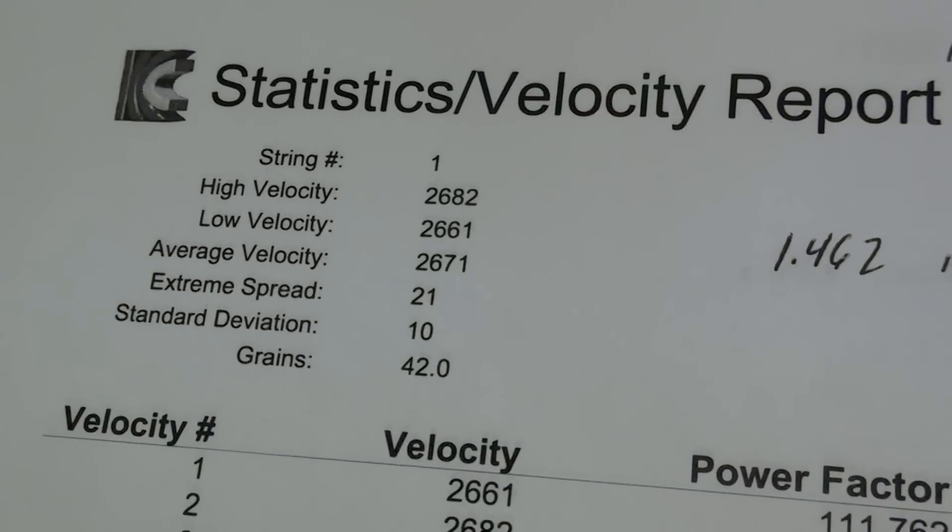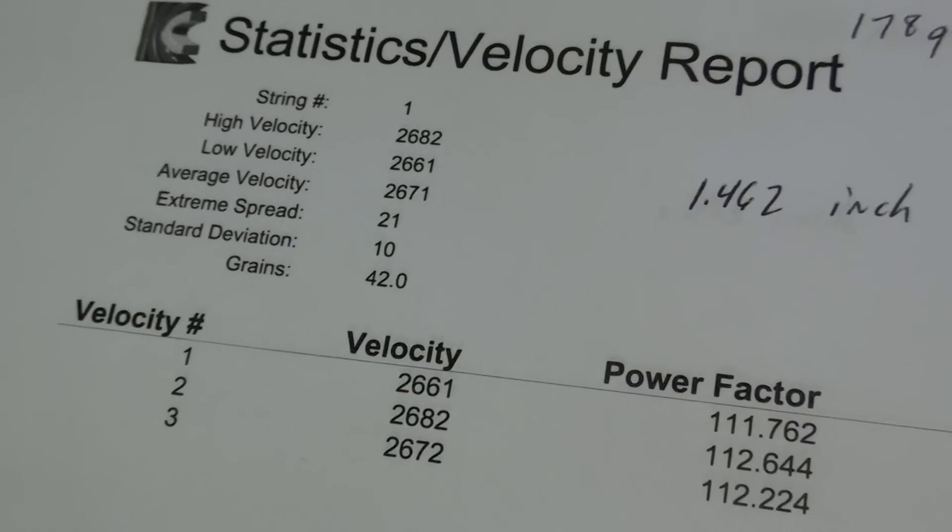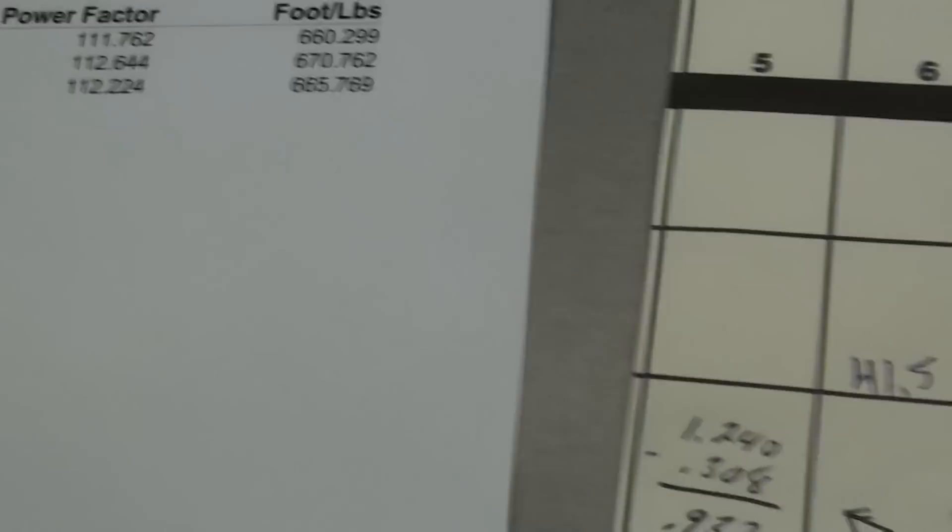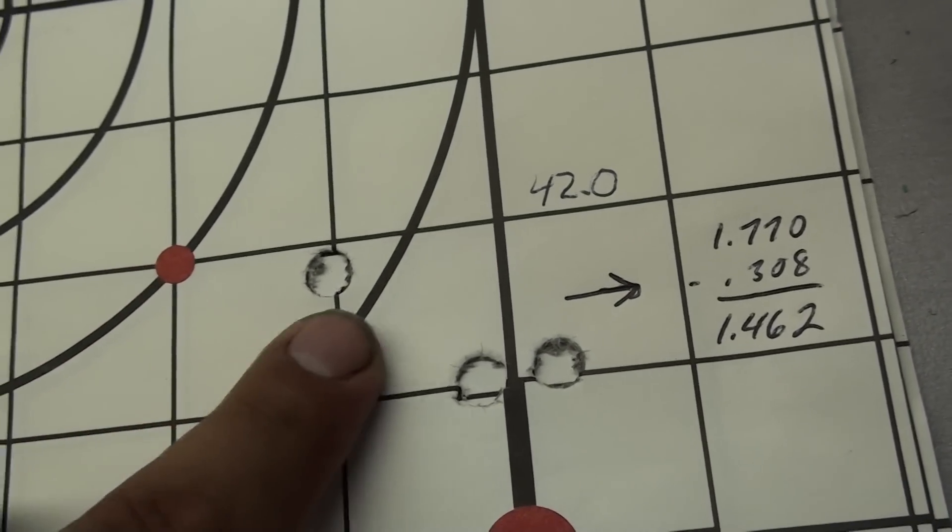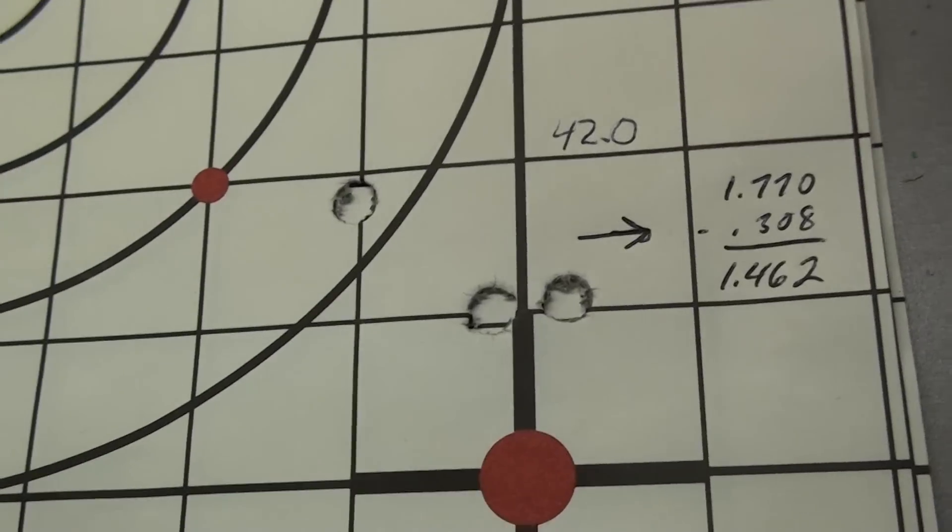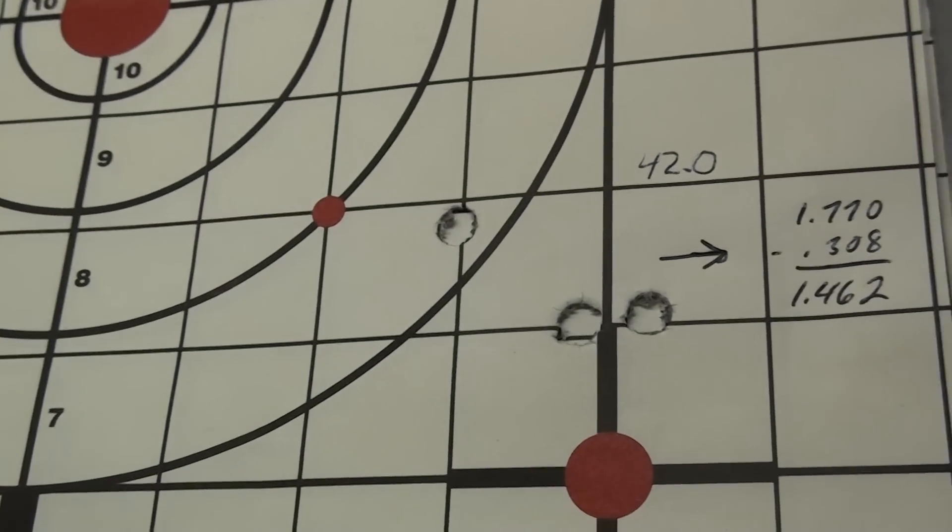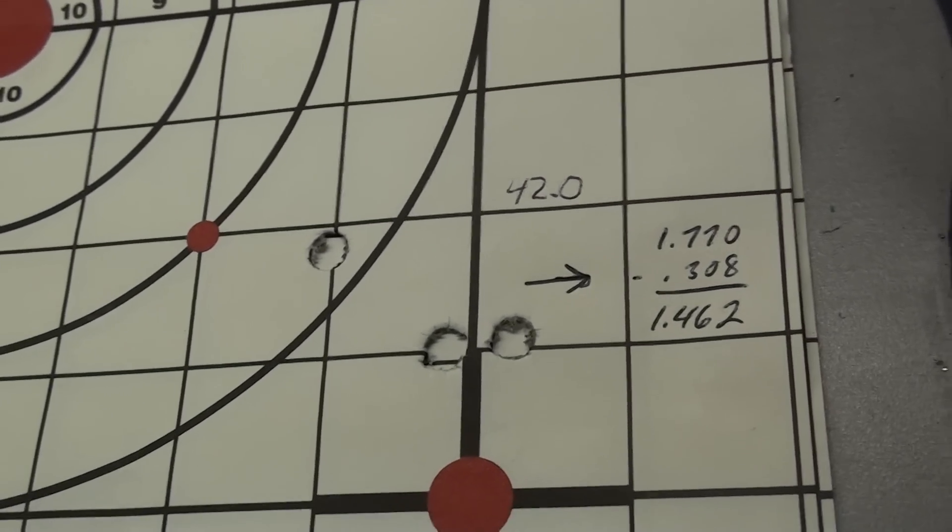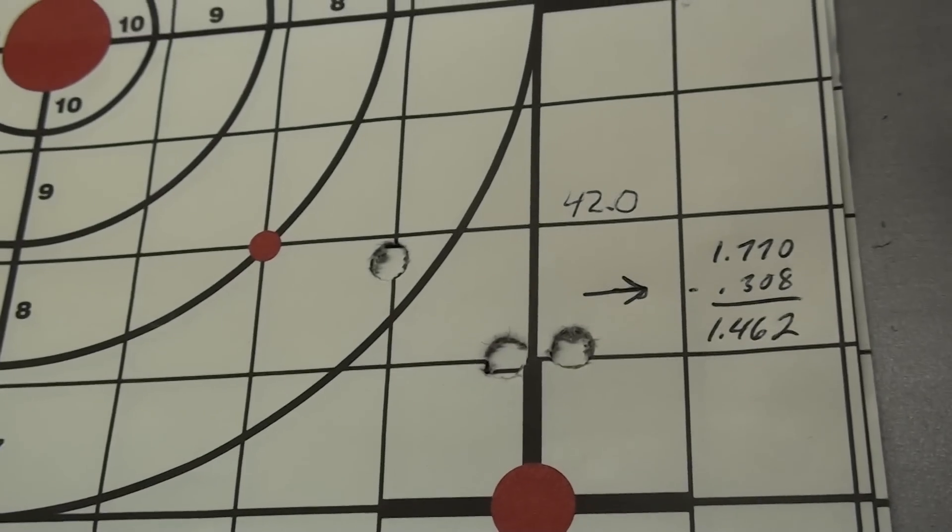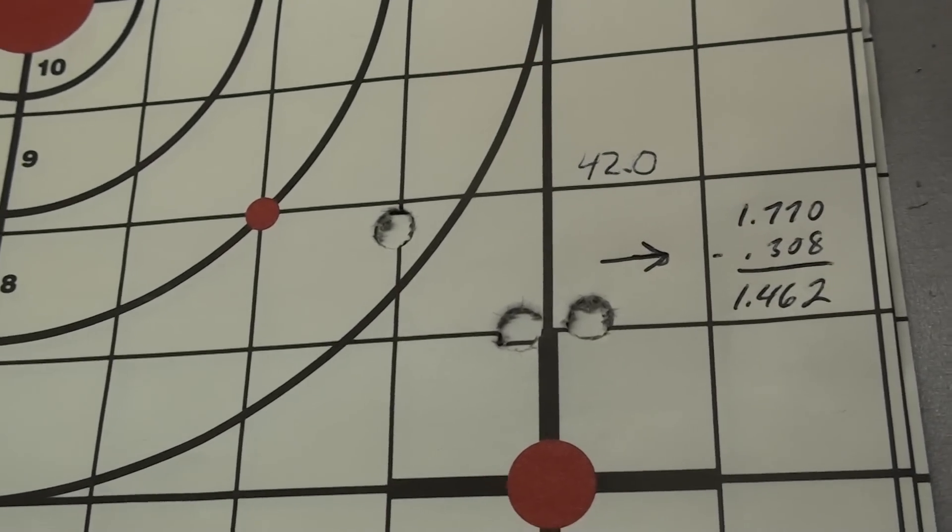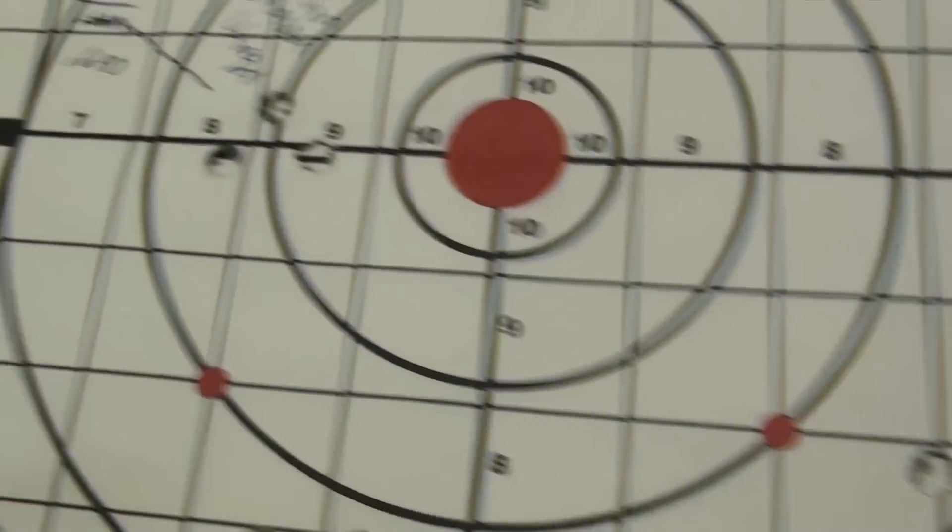Here is 42 grains of Varget powder and this was like my worst group right there. I think it was probably a flyer, but I'm pretty sure if I would have hit it would probably be 0.9 or 0.8 inches at 100 yards. I only did three shots, I should have did five but I wanted to have some fun that day. You see the velocity starting to jump up, average was 2671.